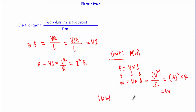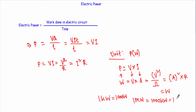When we generate electricity, the watt is a very small quantity, so we use kilowatt or megawatt. One kilowatt equals 1000 watts. One megawatt equals 1000 kilowatts, or 10 to the power of 6 watts.